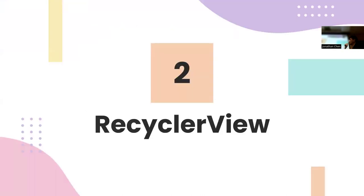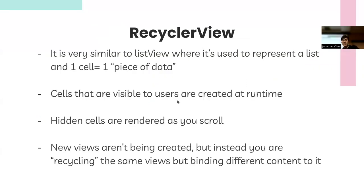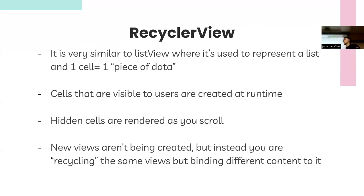The solution to those problems is the RecyclerView. It's similar to ListView in that each card is represented by one piece of data, but cells visible to users are created at runtime — you only render the five visible on screen, not the other 95 that are offscreen. Instead of rendering all 100 cards, you're going to recycle the same five or six. When items go offscreen, they go into a recycling bin, and when new items come onscreen you pull from the bin and switch in the new data.